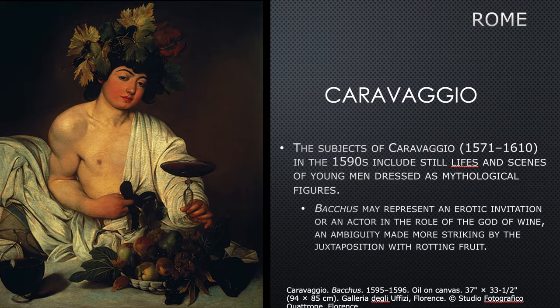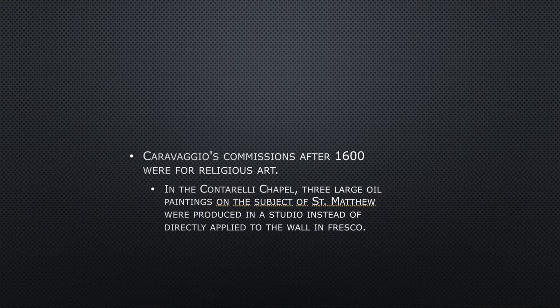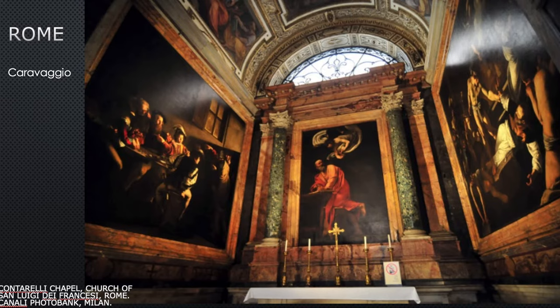This is Caravaggio, and I'm going to show you several paintings by him. He's an artist you will need to know for the quiz so pay attention. The subject of Caravaggio in the 1590s includes still lifes and scenes of young men dressed as mythological figures — this is his very early work and not the most important. But after 1600, most of his commissions were for religious art. In the Contarelli Chapel there are three large oil paintings on the subject of St. Matthew, produced in a studio instead of being painted as frescoes directly on the wall.